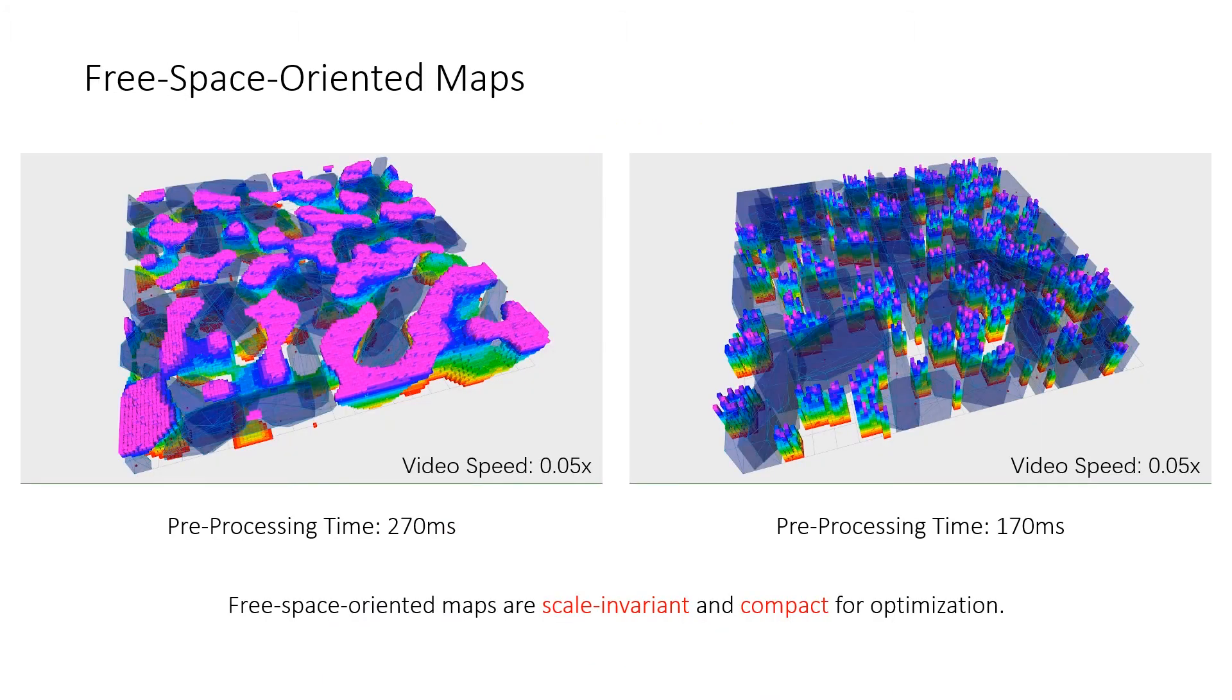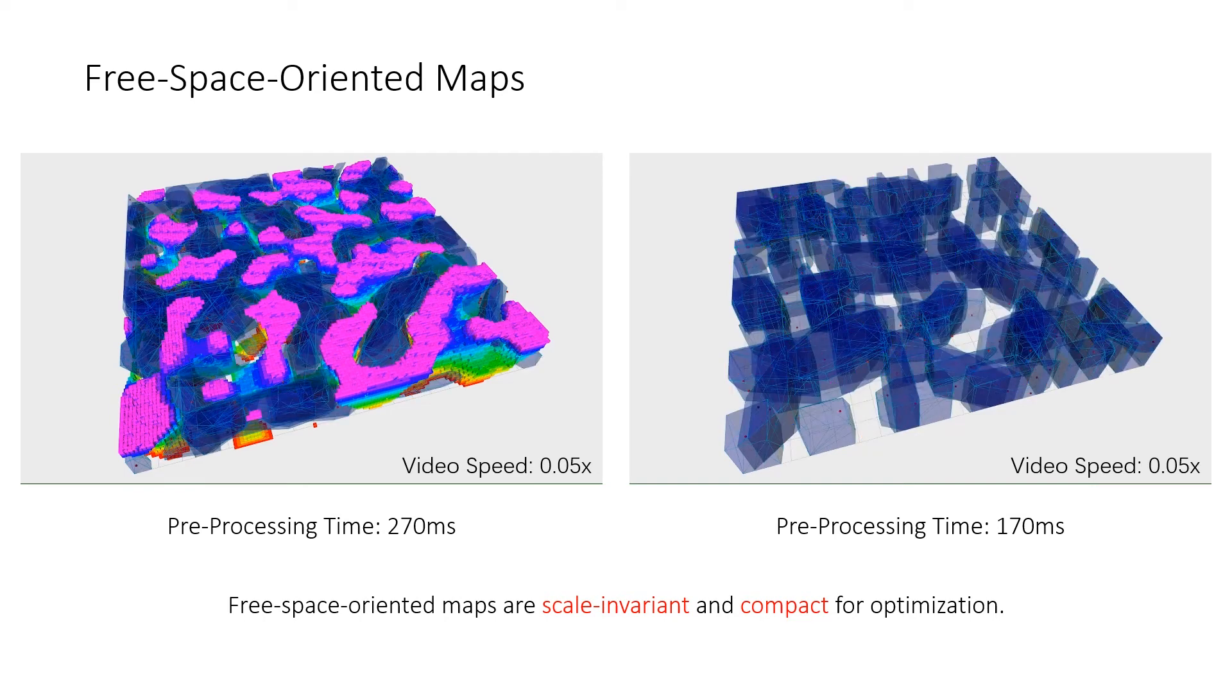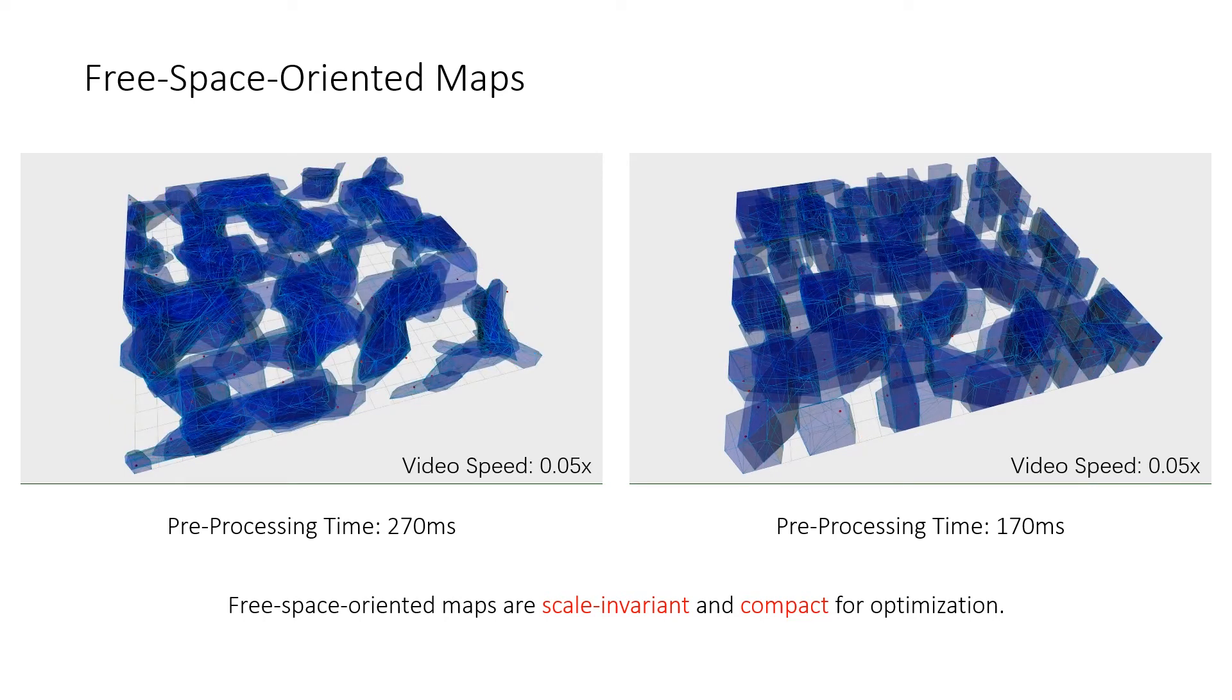As for environment data, we propose free space-oriented maps. A union of convex polyhedra is utilized to approximate the safe region. The pre-processing of a map is far less than one second.